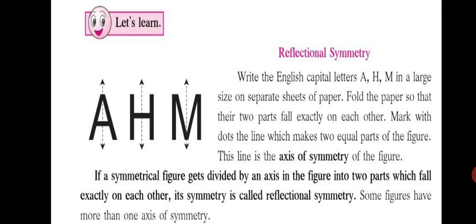Mark with dots the line which makes two equal parts of the figure. This line is the axis of symmetry of the figure. If a symmetrical figure gets divided by an axis in the figure into two parts which fall exactly on each other, its symmetry is called Reflectional Symmetry. Some figures have more than one axis of symmetry. H alphabet has more than one axis of symmetry.